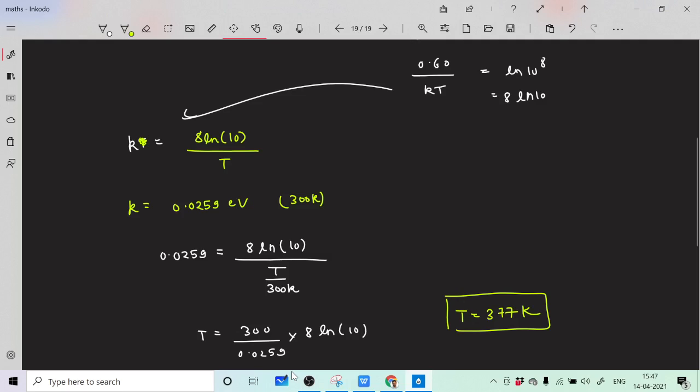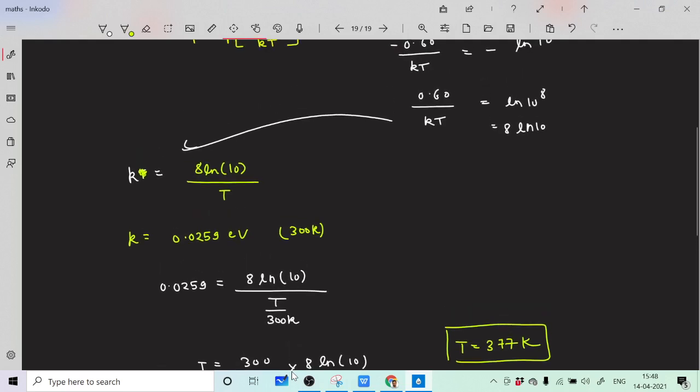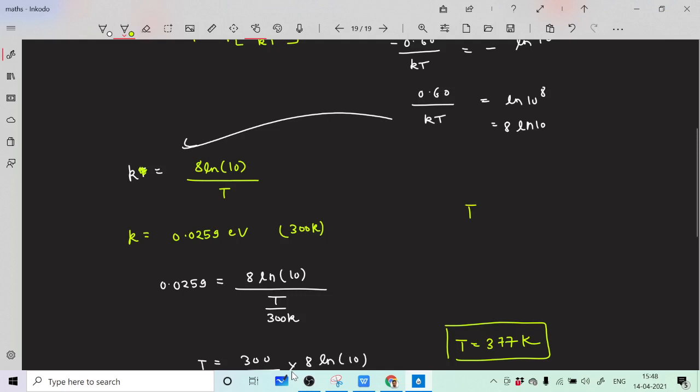After you finish that, we got temperature equal to 377 Kelvin. If you put that value of 10 to the minus 6 for part b, you will get temperature T equals 503 Kelvin.